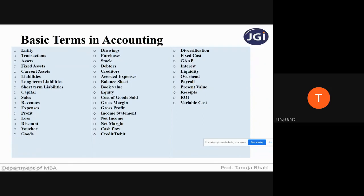A fixed asset is a tangible asset owned by the company — it may be property or equipment. The entity uses such an asset to generate revenue, and such an asset is not converted into cash within one year. So a fixed asset is an asset that is held for a period of more than one year in the business.